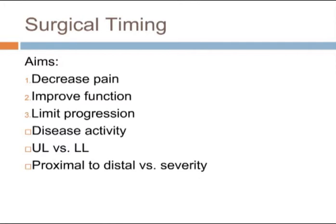The timing of surgery for patients with rheumatoid arthritis is important. Any planned intervention needs clear aims: to decrease pain, improve function of the rheumatoid hand and wrist, and limit disease progression. Surgery should not be planned until no further optimisation can be gained from medical management — a recent JOS article suggests after a period of three to six months of intensive steroid treatment initially.